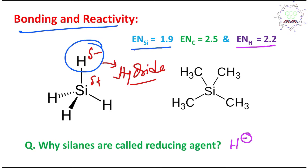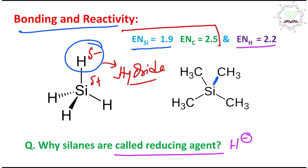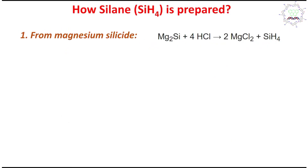That's why silane can act as a reducing agent. If you look at the carbon-silicon bond, this is also very interesting. Carbon is more electronegative compared to silicon (2.5 vs ~1.9), so carbon is δ⁻ and silicon is δ⁺. This is another polarity point — please remember this, as it may be required. Now let's discuss synthesis: how are silanes prepared?